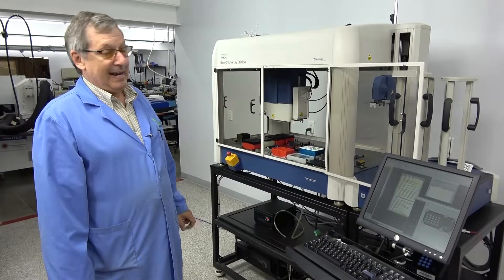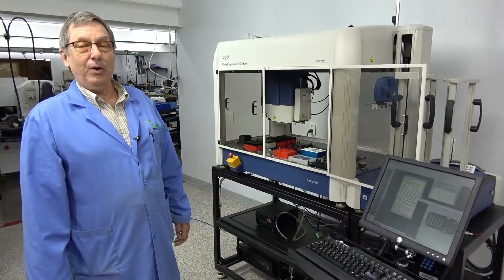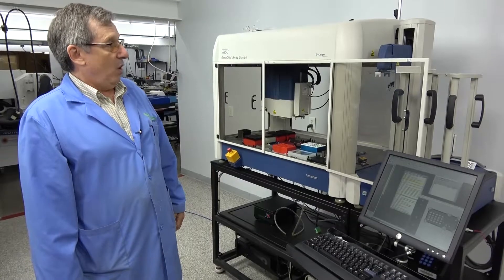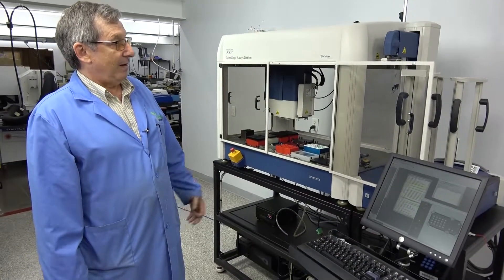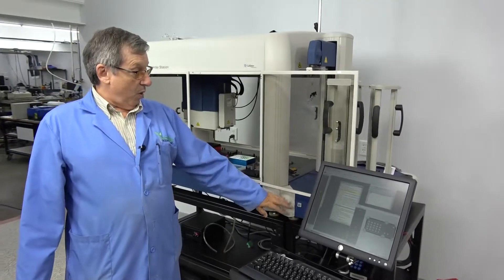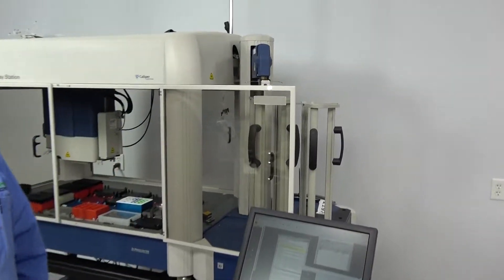This is basically a Caliper Cyclone ALH3000 with additions. First addition is the twister robot, which is a plate handling system.